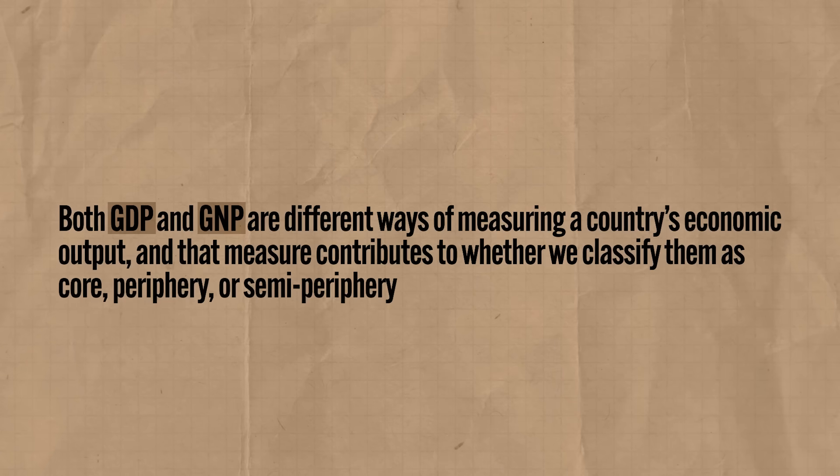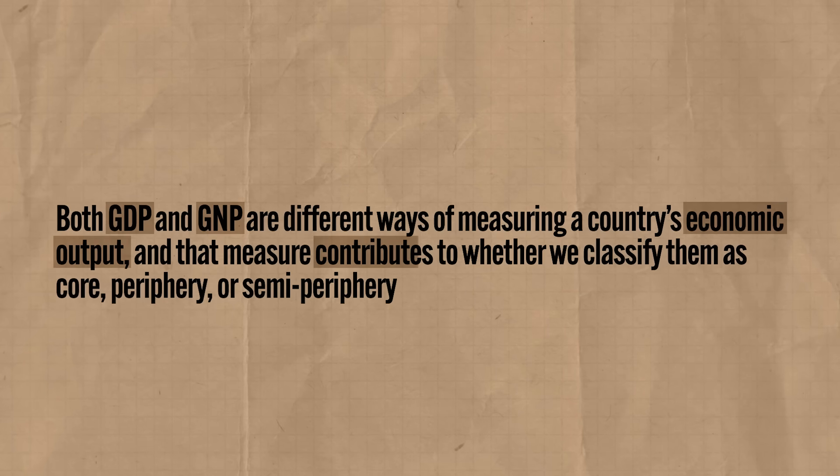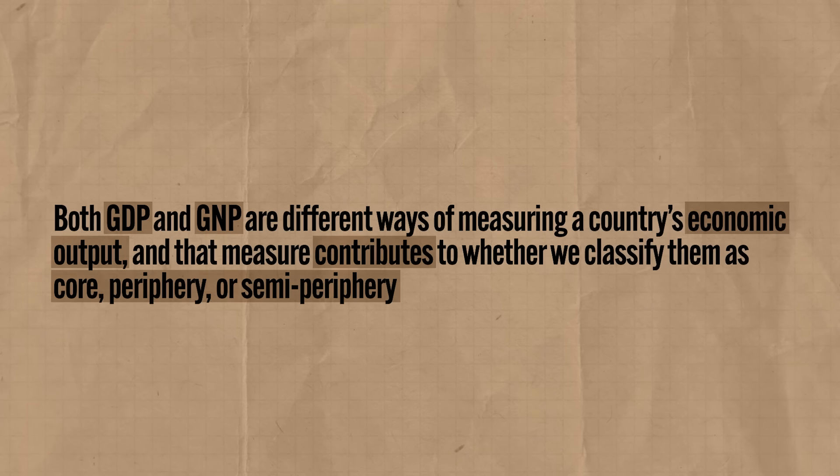Both GDP and GNP are different ways of measuring a country's economic output, and that measure contributes to whether we classify them as core, periphery, or semi-periphery. Economists are always trying to figure out the best way to measure a country's wealth. GNP has fallen out of favor, while GDP has become a more reliable measure of economic development today.